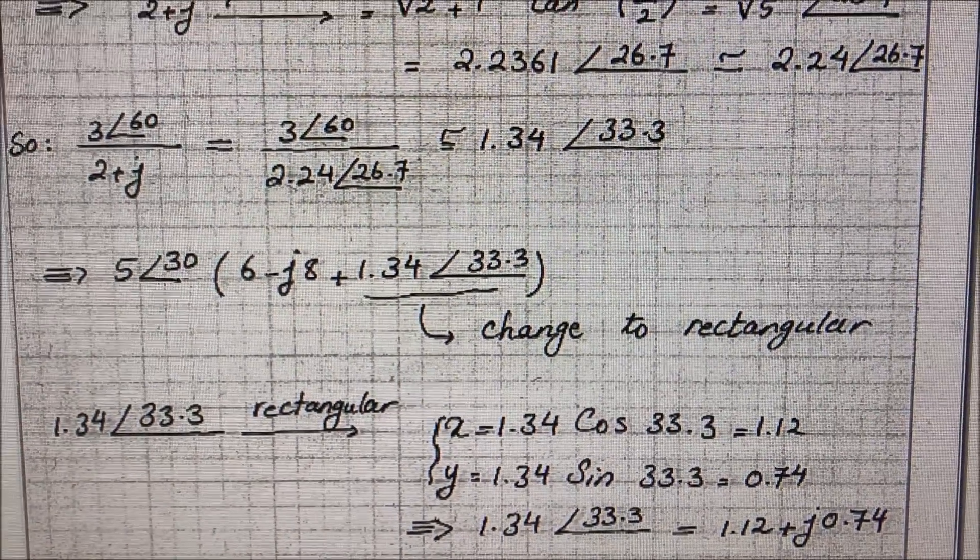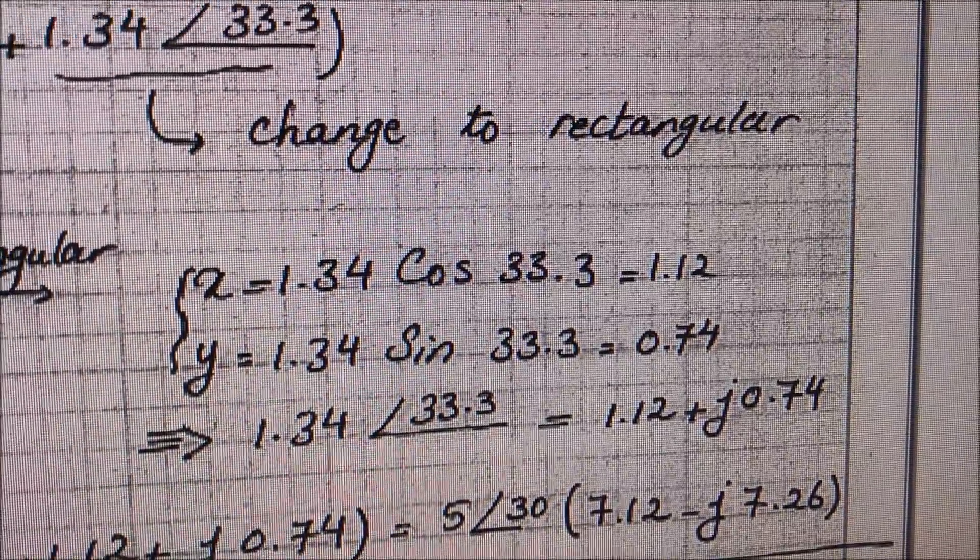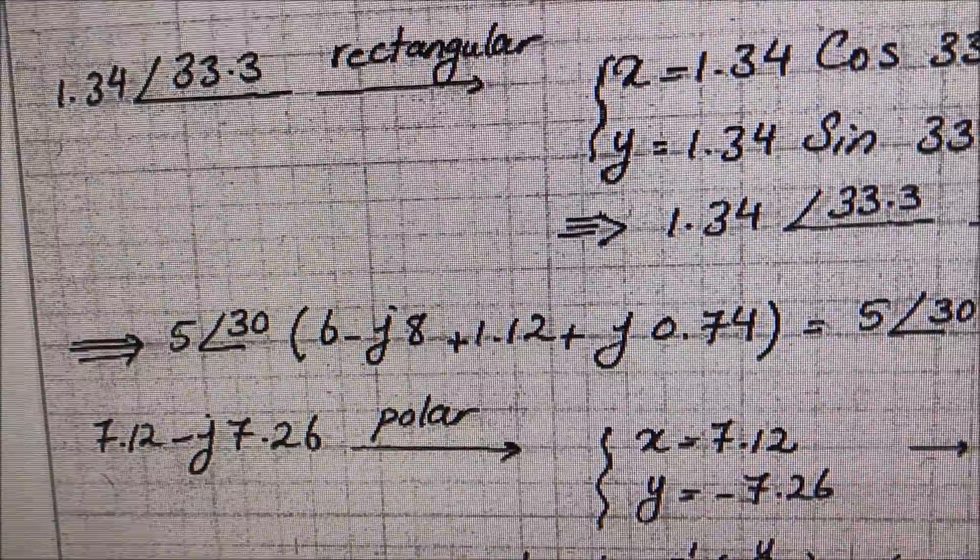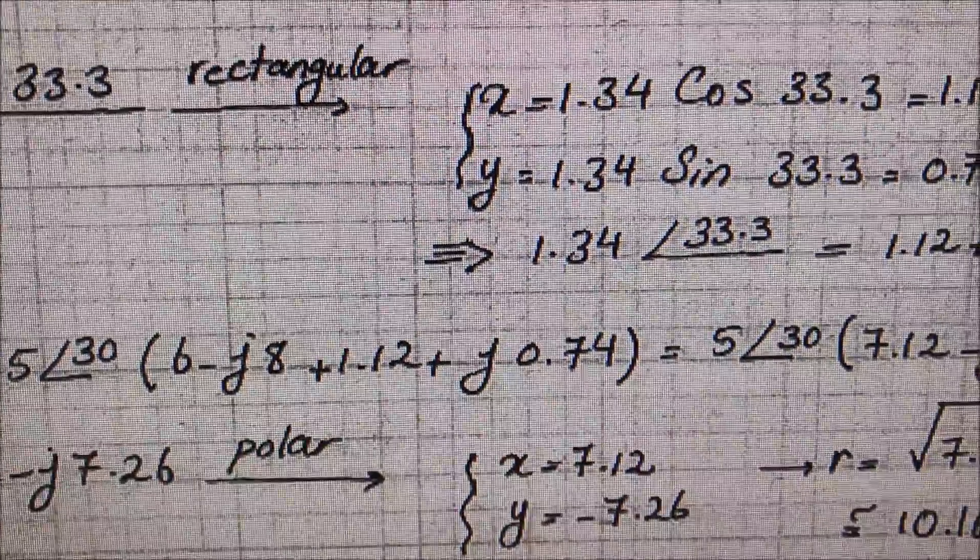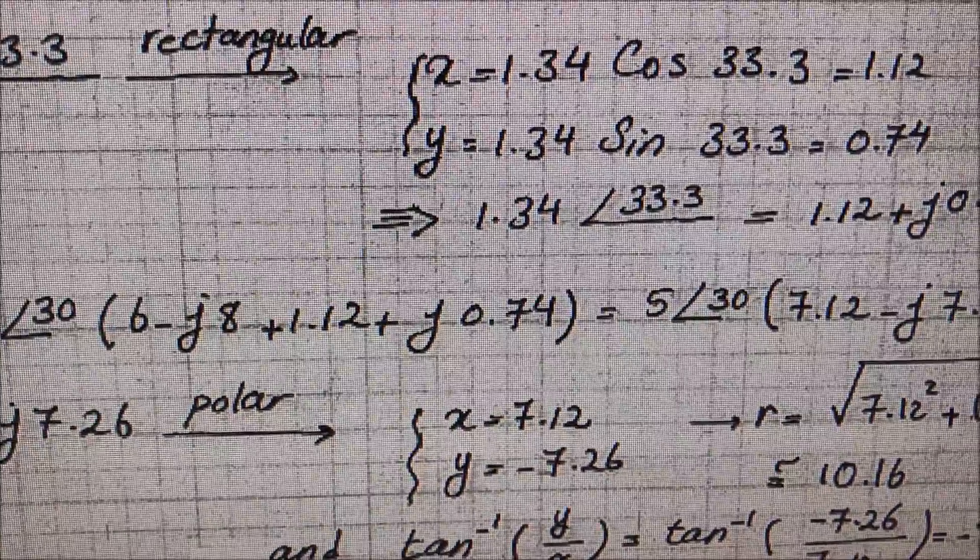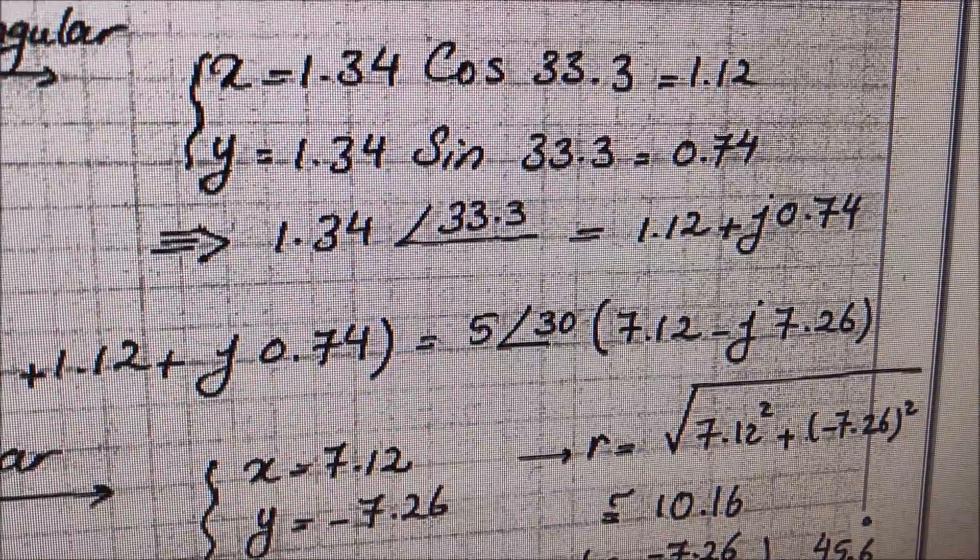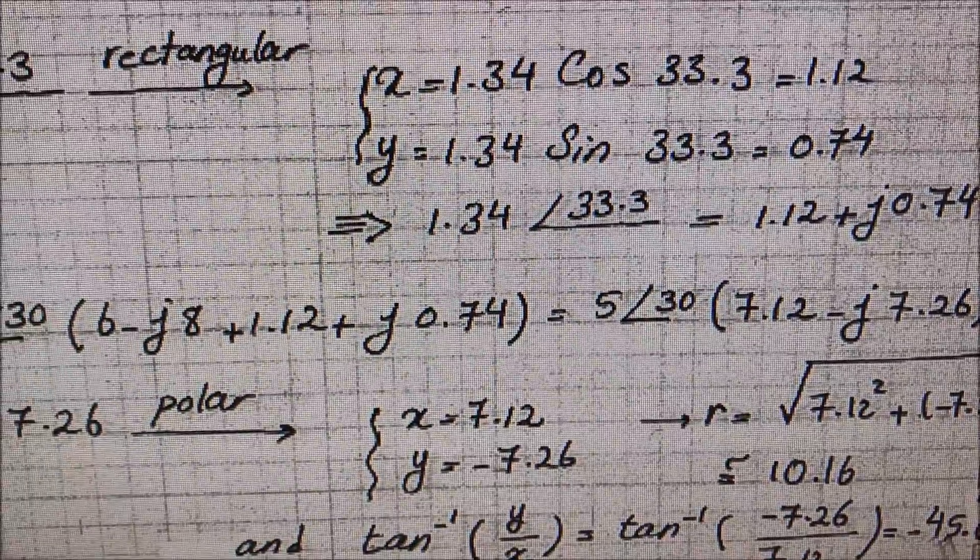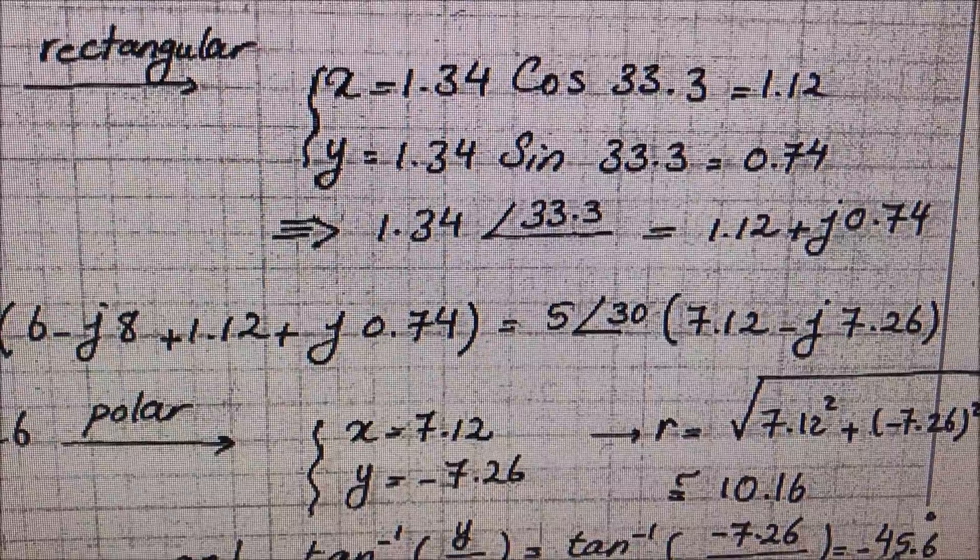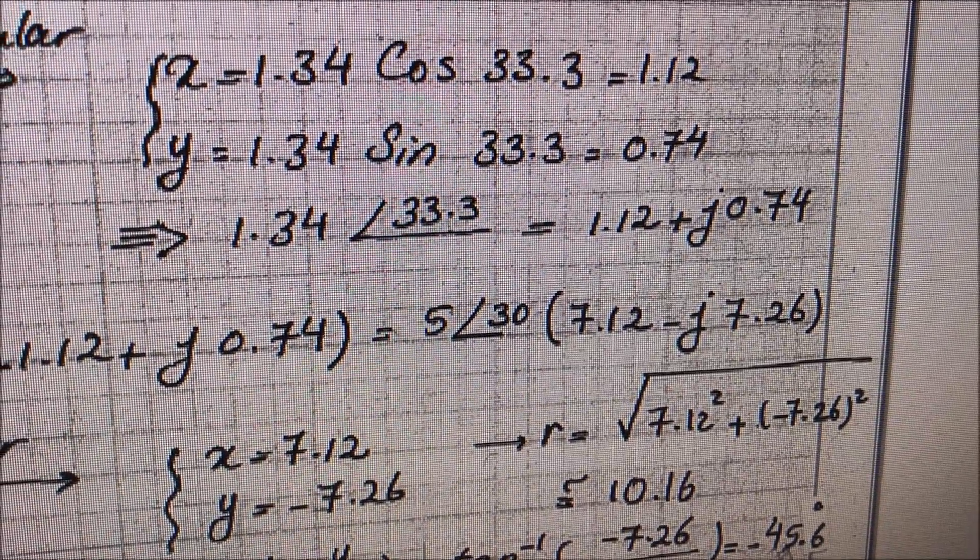Now that you got that into rectangular, the 1.12 plus j0.74, you plug it back in into the parentheses. And then now it's just a matter of addition and subtraction. The coefficients 6 and 1.12 add together to get you 7.12, and the negative j8 plus j0.74 to get negative j7.26.